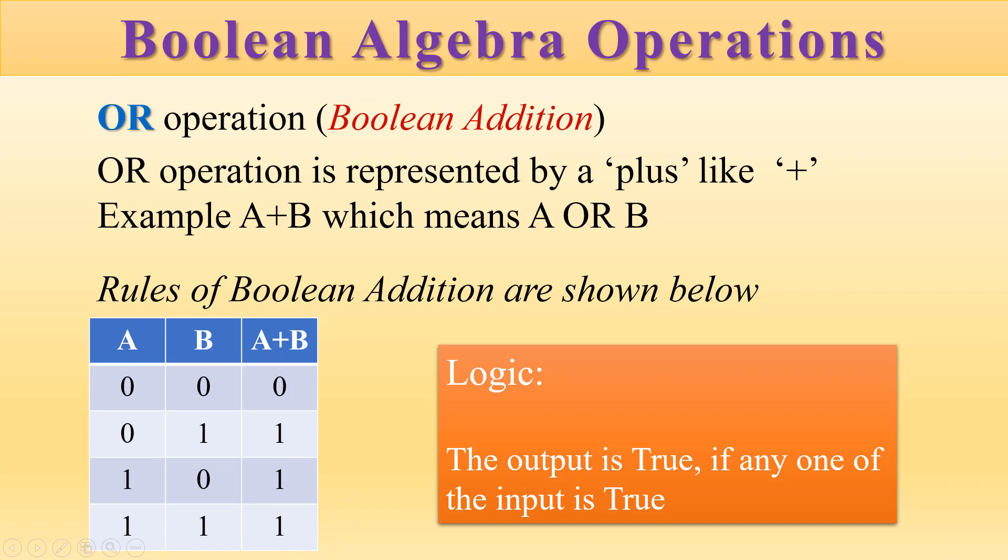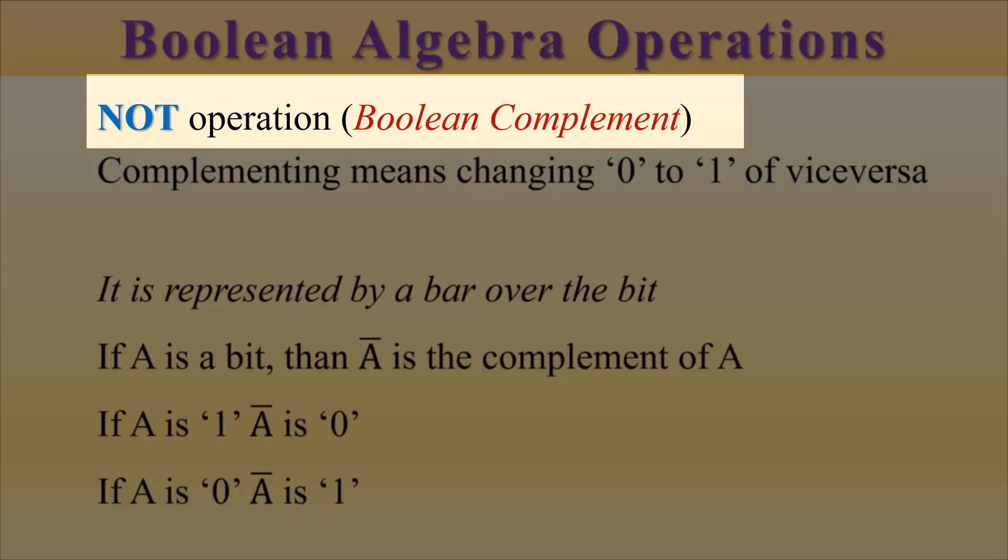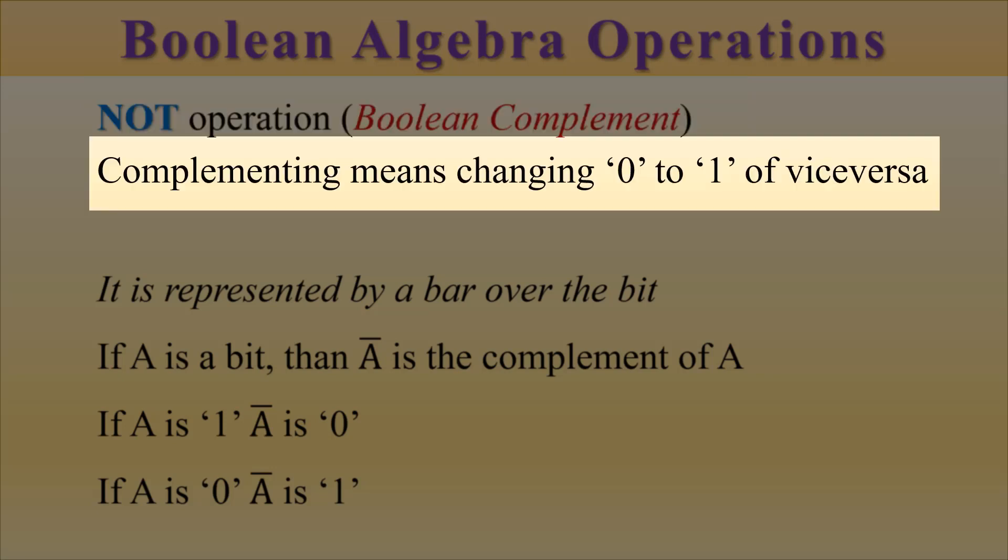Let us go to the next operation, the NOT operation. The NOT operation, or Boolean complement, means that you have to change the value of 0 to 1 or vice versa, that is, 1 to 0.